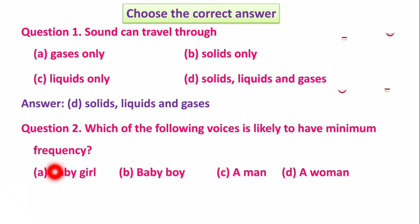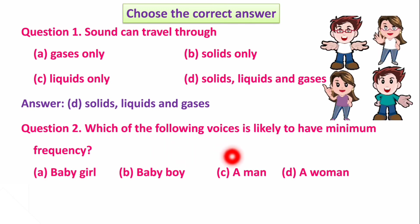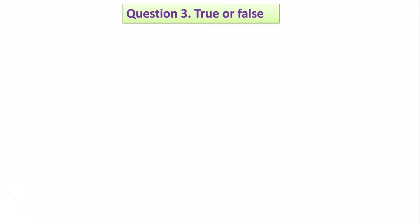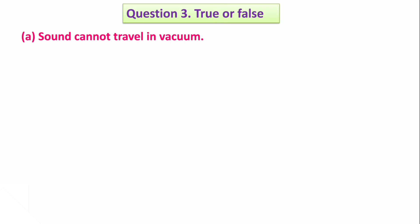Next one is: Which of the following voices is likely to have minimum frequency? Options are: Baby girl, Baby boy, Man, or Woman. The answer is a man, because a man's voice has the lowest frequency.